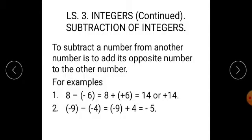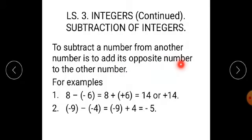Now students, last topic in the third lesson — integers — that is subtraction of integers. The rule you have to follow here to subtract a number from another number is to add its opposite number to the other number. Before starting this topic, we have already learned what opposite numbers are. Therefore, again I repeat: to subtract a number from another number is to add its opposite number to the other number.